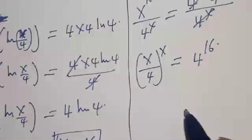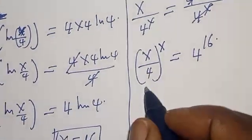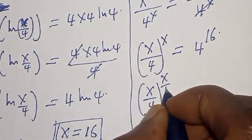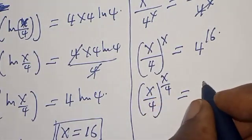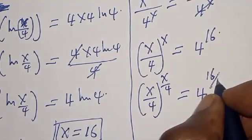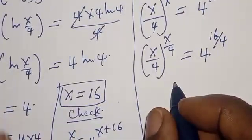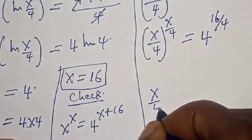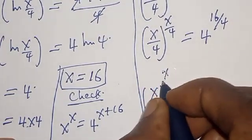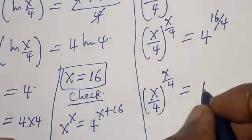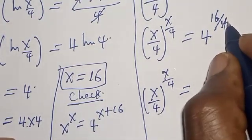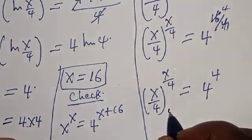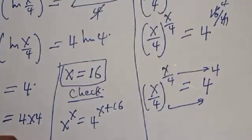Let's divide the exponents of both sides by 4. We have x over 4, raised to power x over 4, is equal to 4 raised to power 16 over 4, which is 4 raised to power 4. By comparing, x over 4 raised to power x over 4 equals 4 raised to the 4th. Therefore, comparing both sides, x over 4 equals 4.